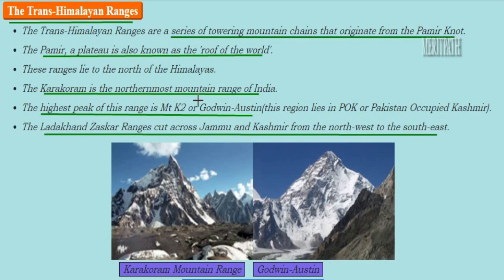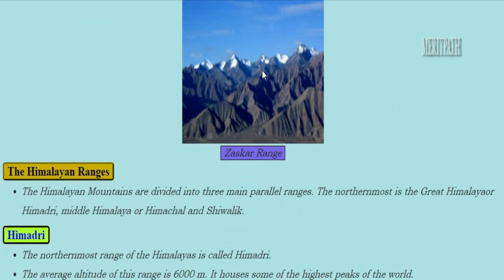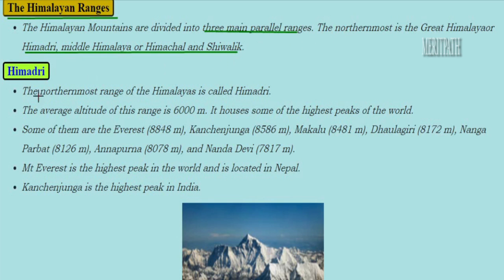The Karakoram is the northernmost mountain range of India, and its highest peak is Mount K2, also known as Godwin Austin. This region lies in Pakistan-occupied Kashmir. There are also the Ladakh and Zaskar ranges, which run across Jammu and Kashmir from the northwest to the southeast.